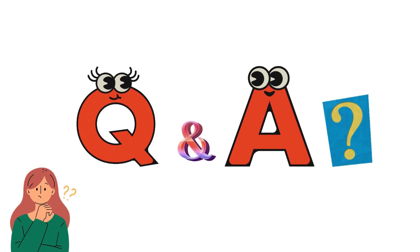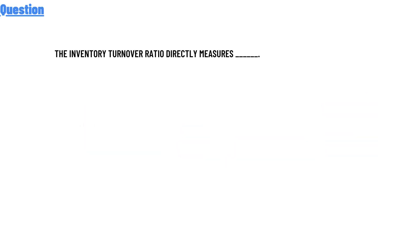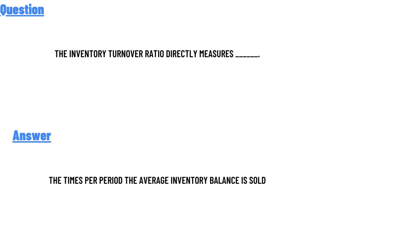Our today's question is: the inventory turnover ratio directly measures ______. The correct answer is: the times per period the average inventory balance is sold.